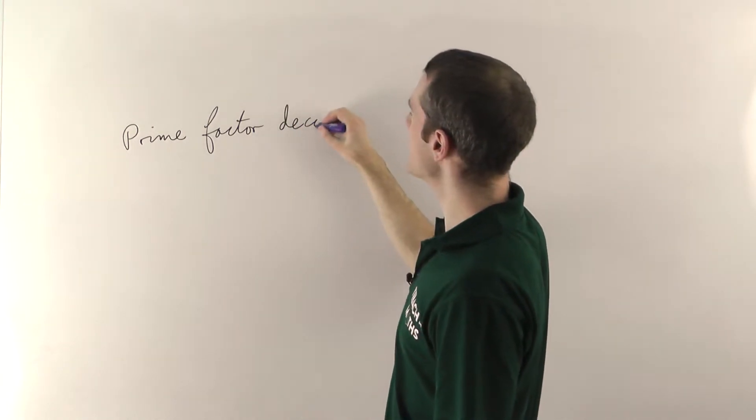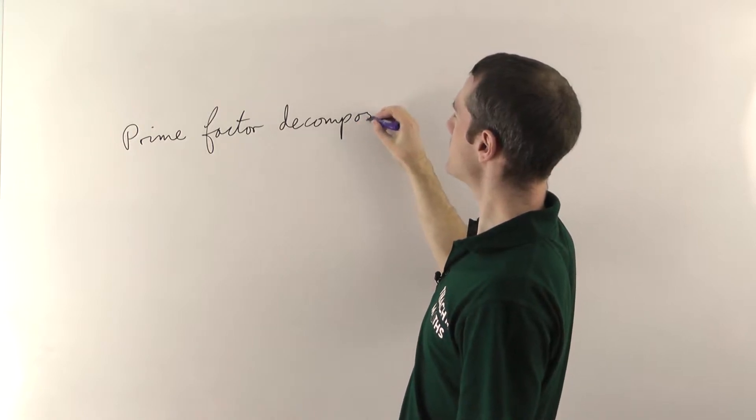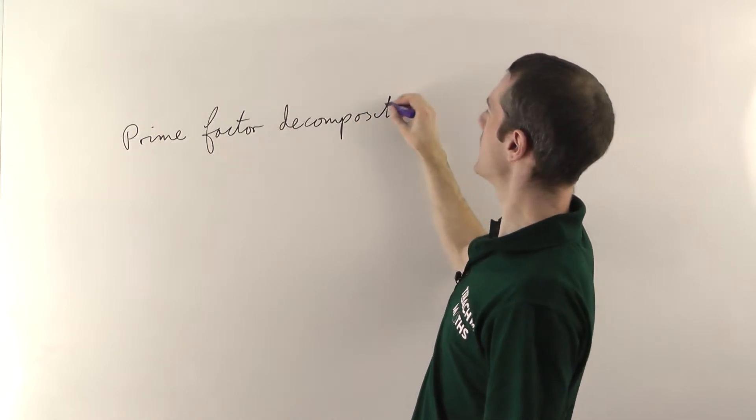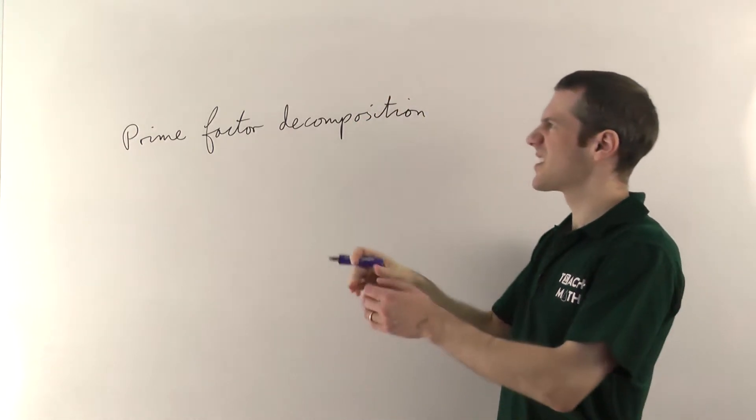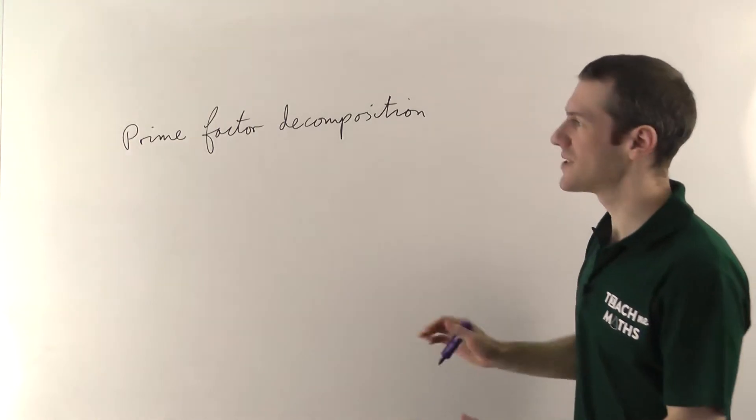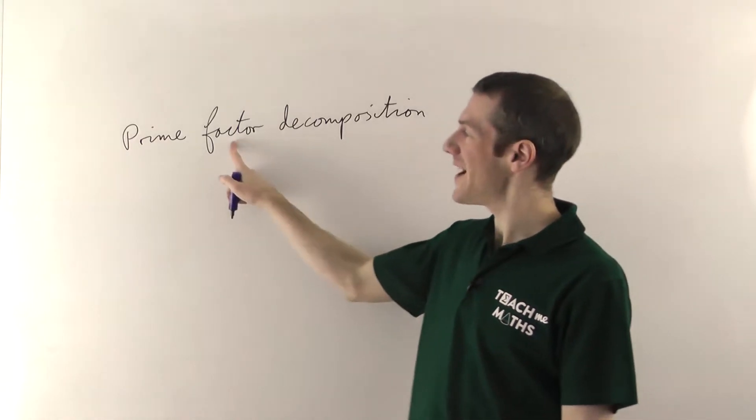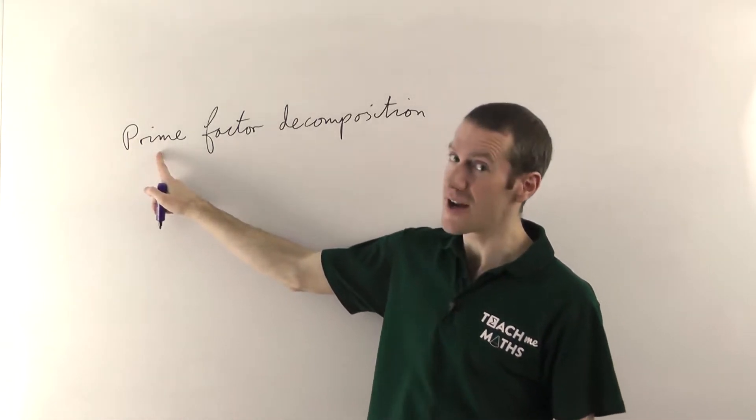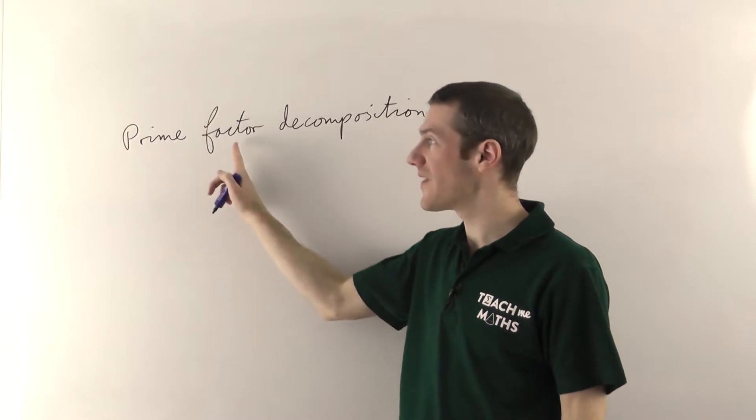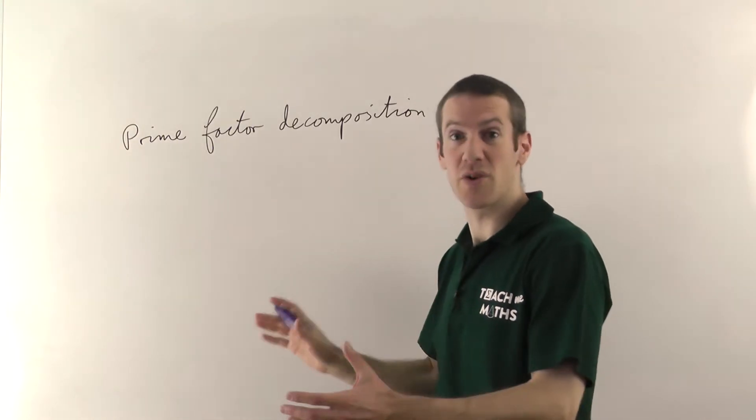Decomposition, well if something decomposes that means it gets broken down into smaller bits, the bits that kind of make it up. So what we're saying is for any given number we're going to try and split it up into factors which are prime. So you only want the factors that are prime numbers. That's what we're going to do here.